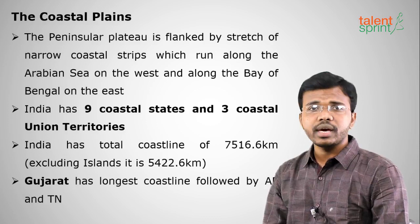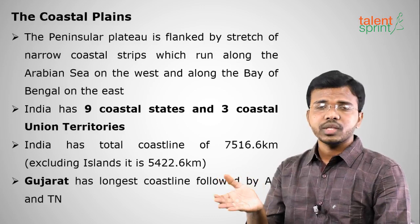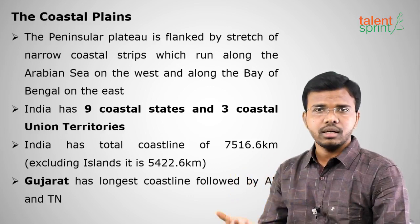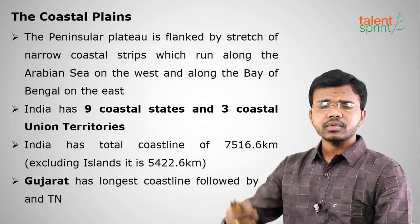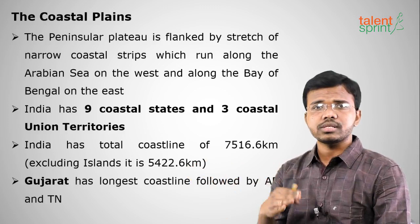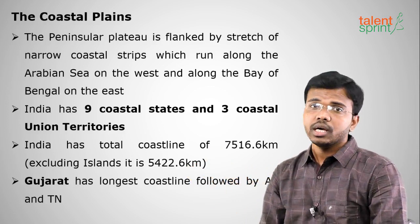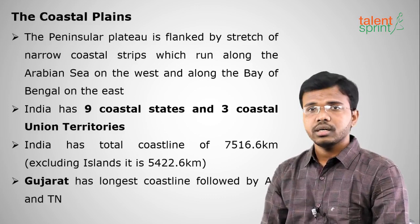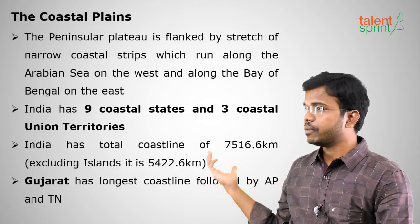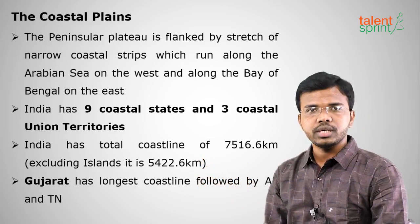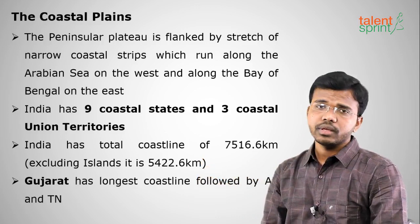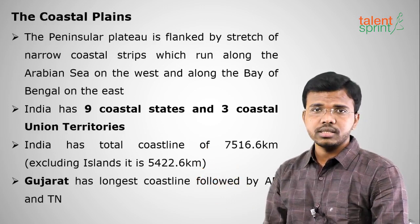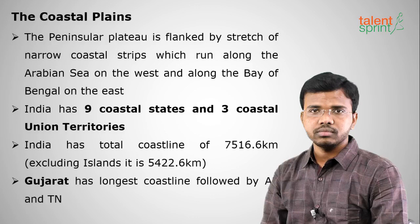Moving on to Coastal Plains: India has nine coastal states and three coastal Union Territories — Puducherry, Daman and Diu, and Dadra and Nagar Haveli. The coastal areas flank the Peninsular Plateau from Gujarat to West Bengal. Gujarat has the highest coastline among Indian states, making it the highest salt-producing state in India, followed by Andhra Pradesh and Tamil Nadu.